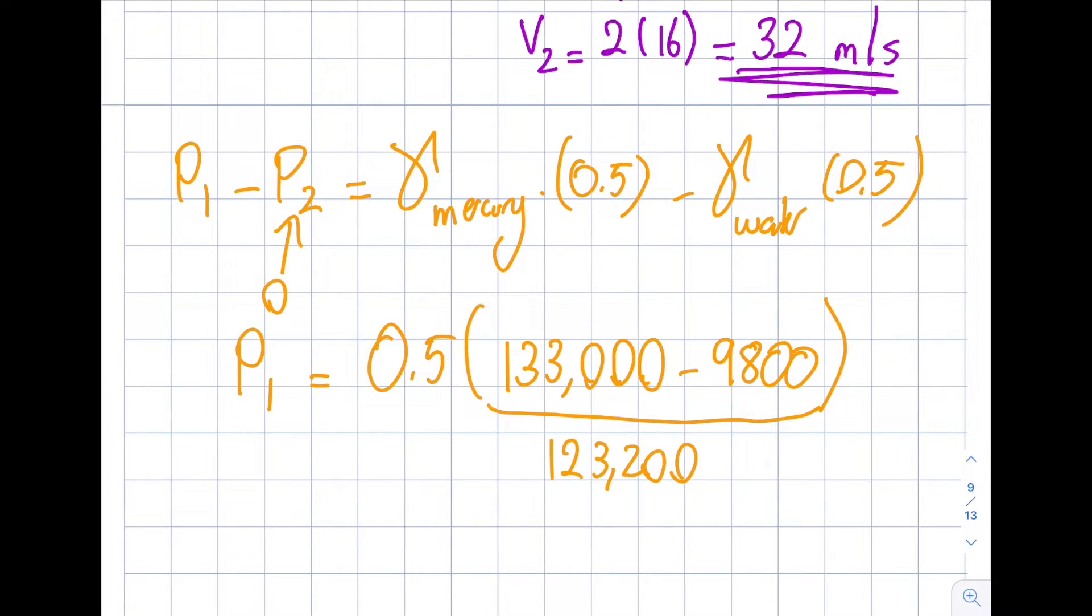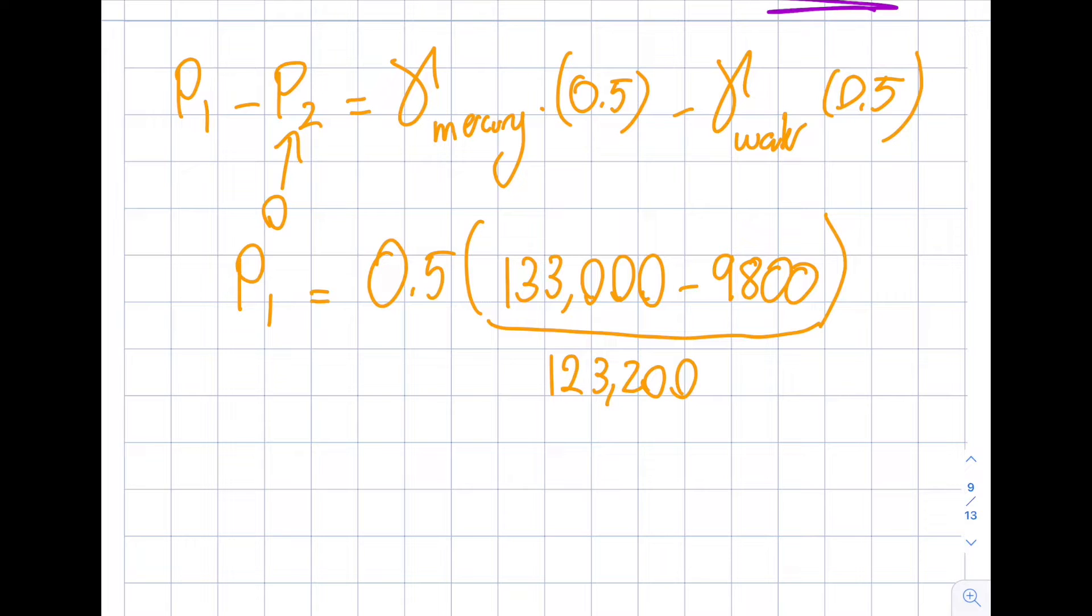Will be the value, and if I divide this by 2, 12,000 divided by 2 is 600, 122,000 is 61,600 Pascals is what I get as my P1 value.